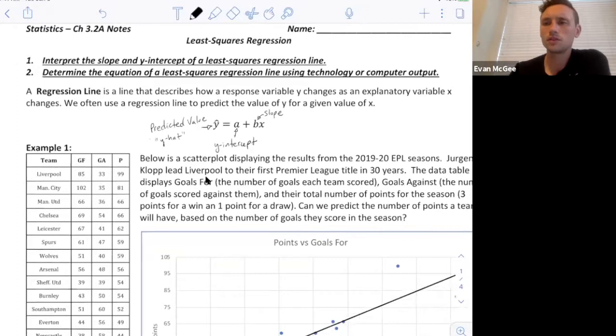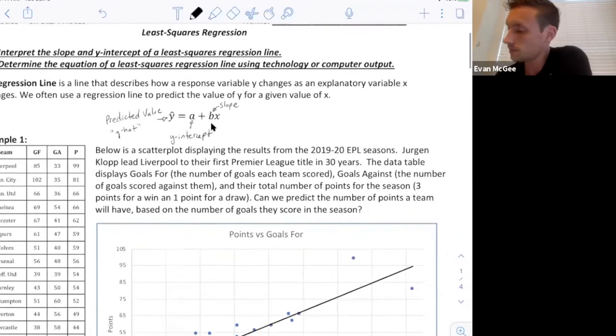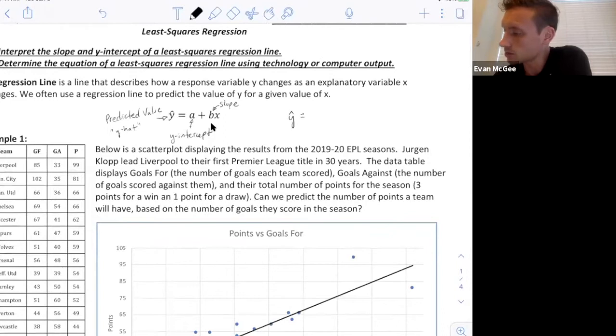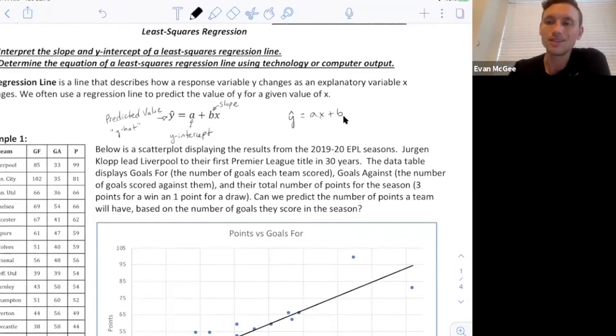One thing to consider is in your calculator, you will see another equation that looks similar to this, but it will be flipped. It's going to say y hat equals ax plus b. In this case, your slope is now a, and your y-intercept is b. The key is you need to know that the slope is always the constant that is the coefficient of x.